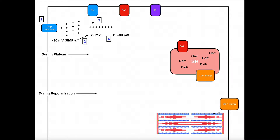At rest, the resting membrane potential of the cardiomyocyte is approximately negative 90 millivolts — very negative, even more so than skeletal muscle or neurons. When these positively charged ions move in through the gap junction, the resting membrane potential gets a little more positive, going up to negative 70 millivolts. This shift is due strictly to the positive ions from the adjacent cardiomyocyte, and it's these ions that will trigger all the subsequent events.